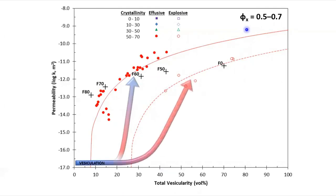In contrast, explosively erupted samples plot at lower permeability for a given porosity and were unable to reach the permeabilities necessary to outgas efficiently.